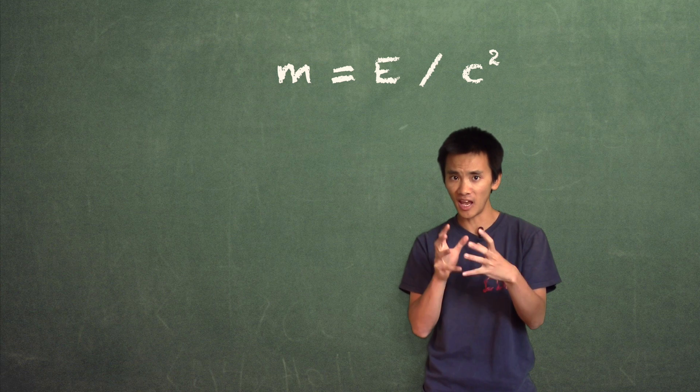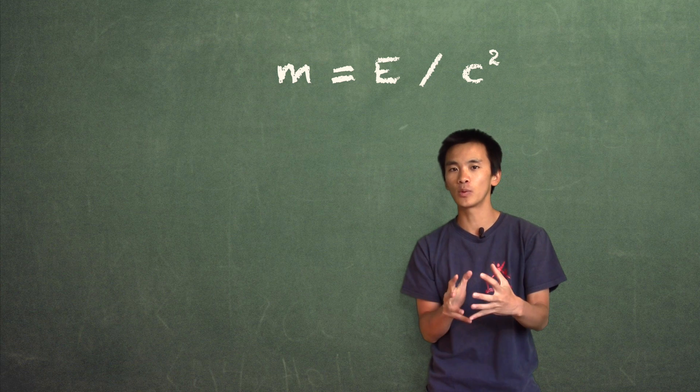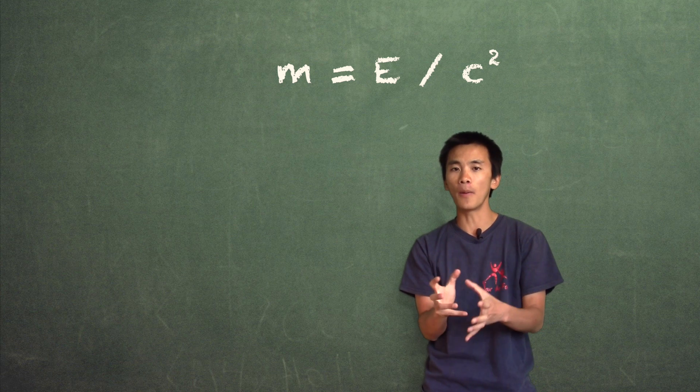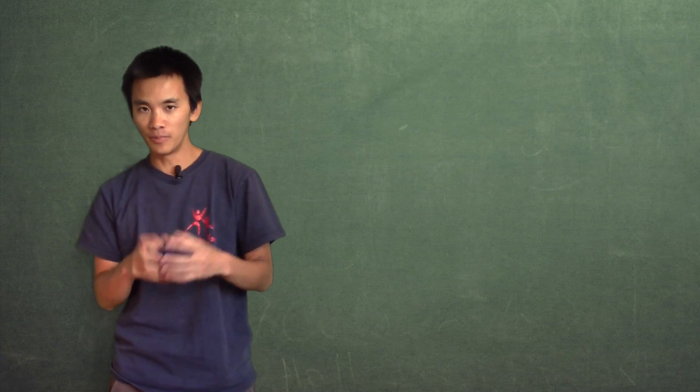But I think it's important to write it m equals to e divided by c squared. Because the meaning of this equation, the true message that it sends, is something about mass, not something about energy.